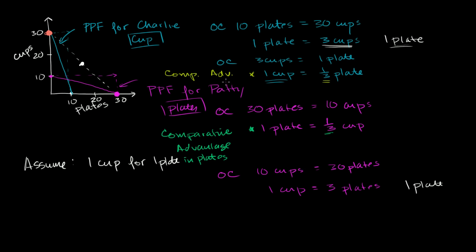We can't confuse this with absolute advantage. Absolute advantage in a given product just means that you are more productive at that thing given the same inputs. And so if I were to just give you this graph and you didn't know how many workers Charlie or Patty had and how many inputs they're using to produce either 30 cups in a day or 30 plates in a day, you actually could not make any statement about absolute advantage.